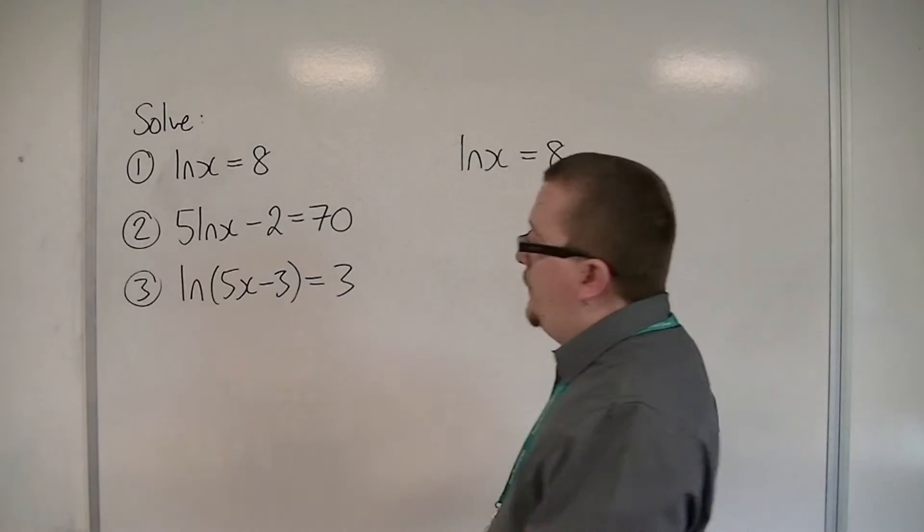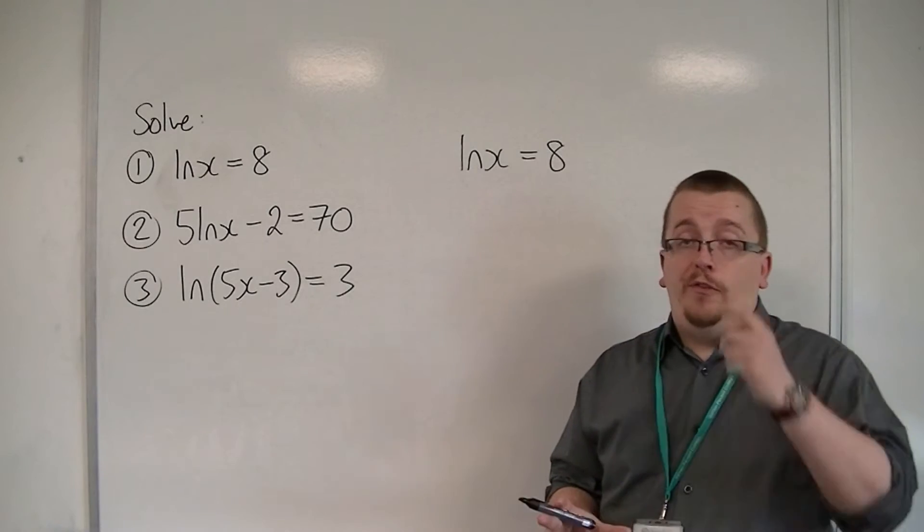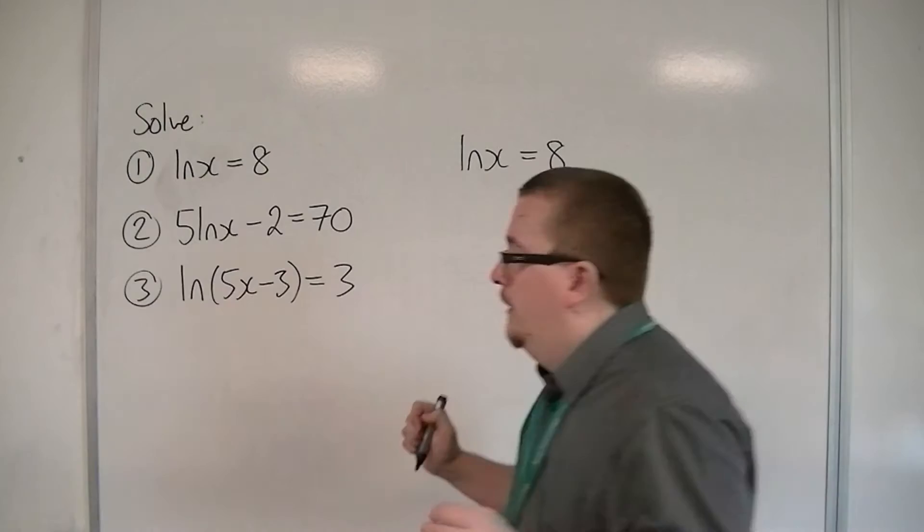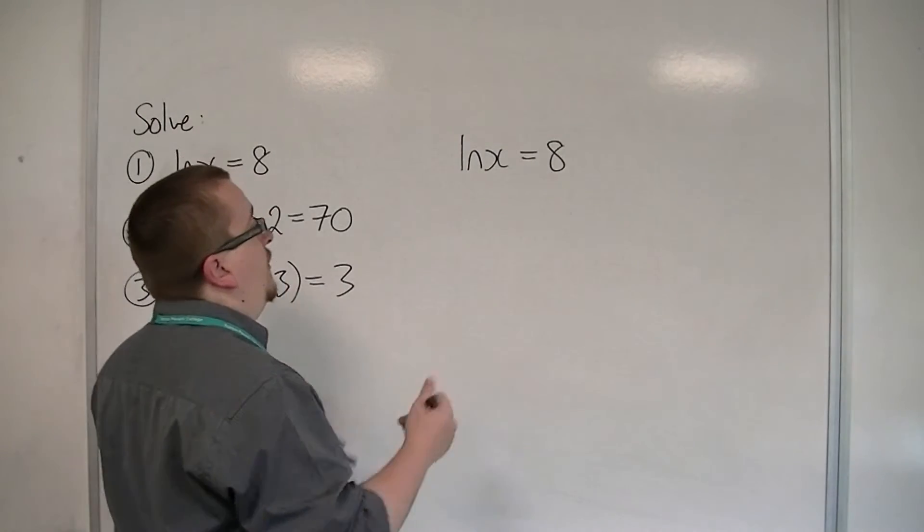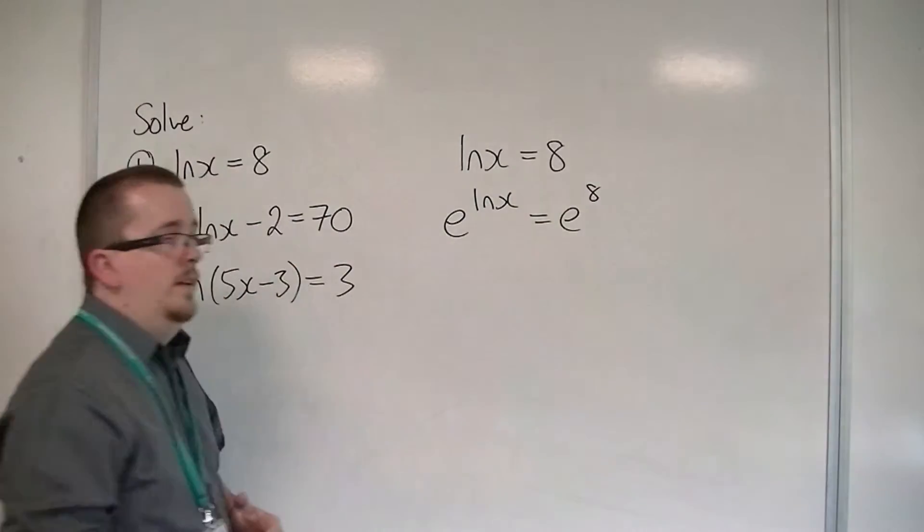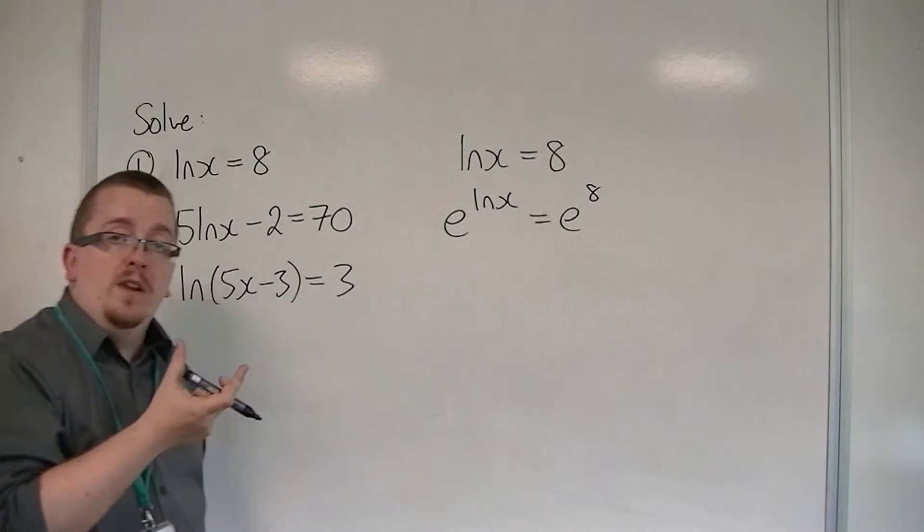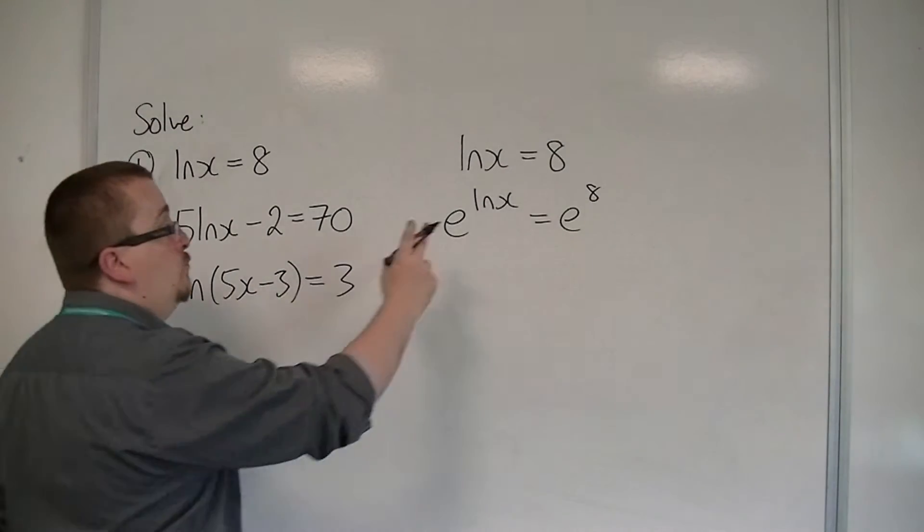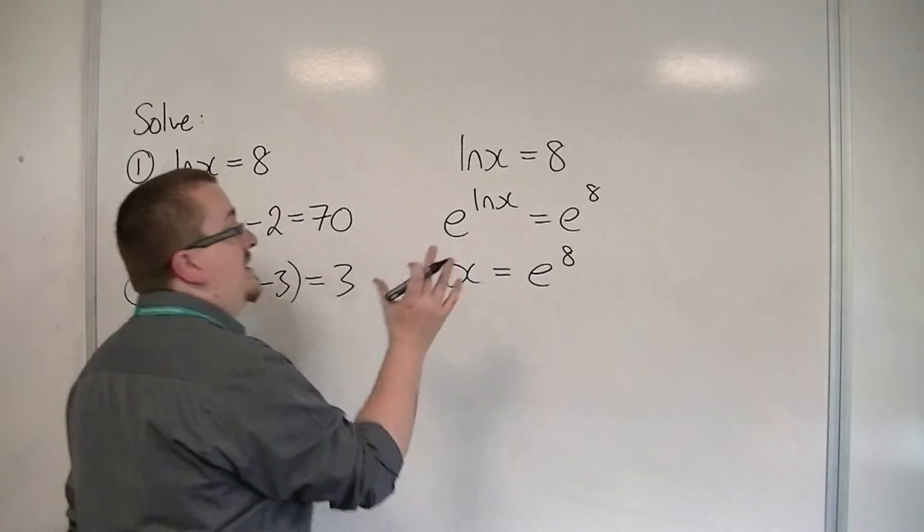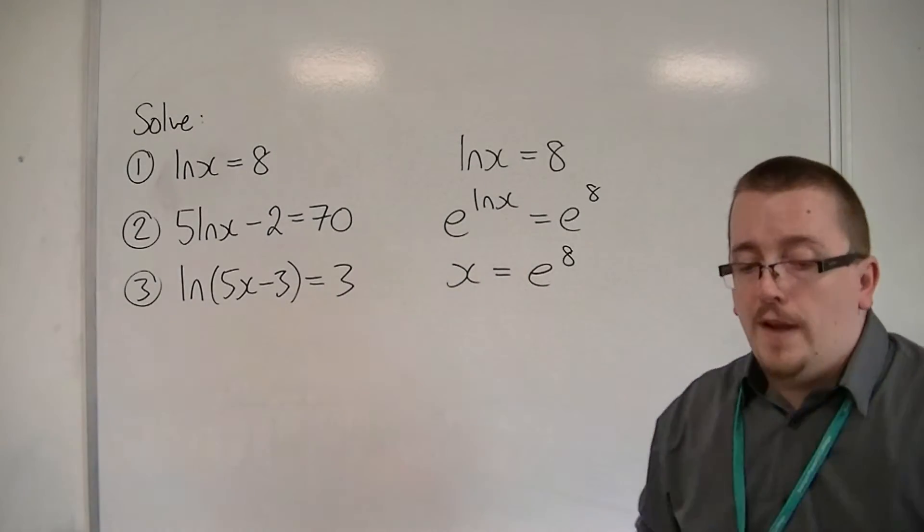Previously, when we were dealing with e to the x equals a number, we would log both sides. Here, what we can do is e both sides. So I can have e to the log of x is equal to e to the 8. And we know that e and log invert one another. So when I have e and log right next to each other like that, then I just get left with x. So the exact answer to this first equation is x is equal to e to the power of 8.